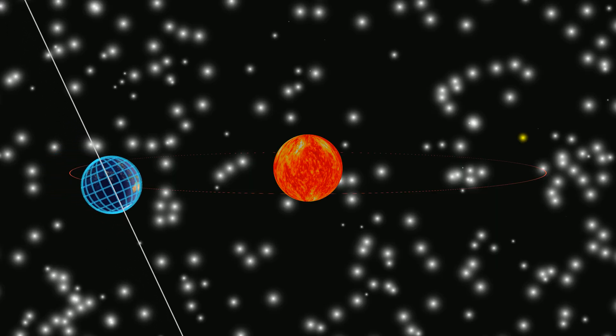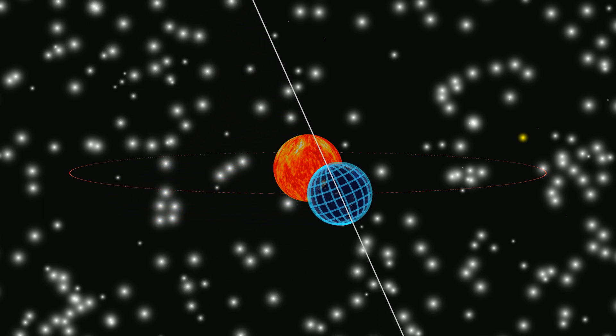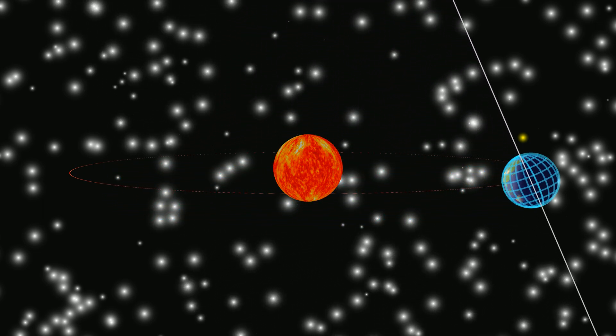In the ecliptic reference frame, where the Sun is at the origin, the Earth travels half of its orbit in six months.